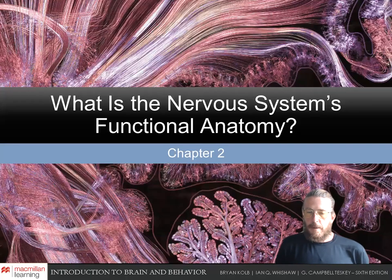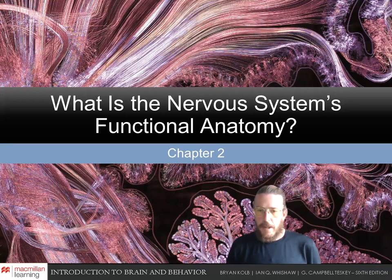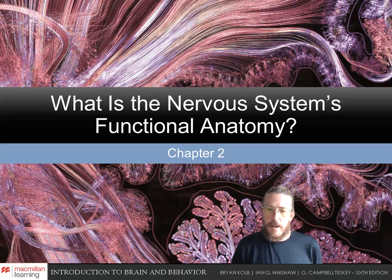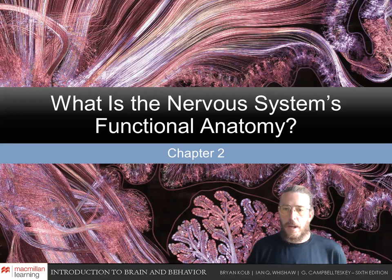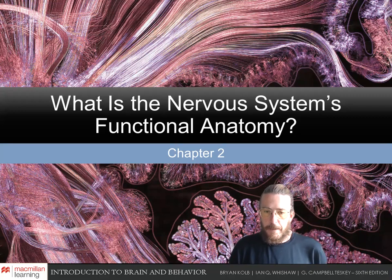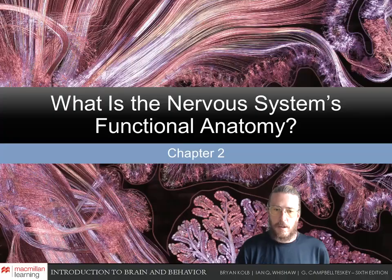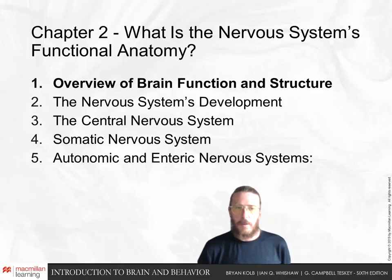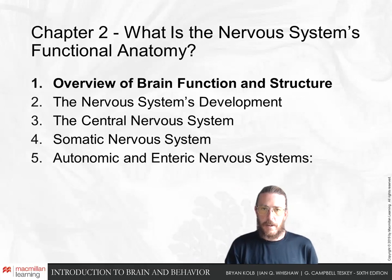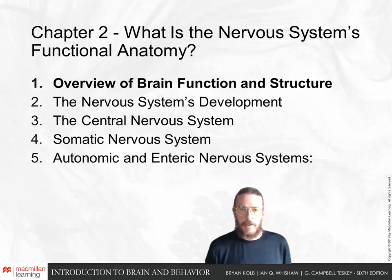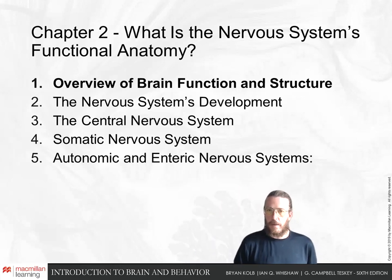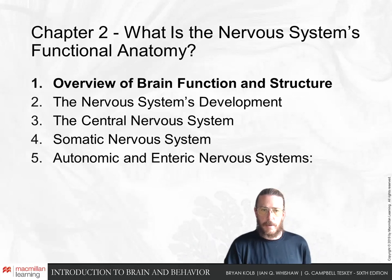Welcome back. In this lecture we'll be talking about the macroscopic anatomy of the human nervous system — things we can generally see without a microscope. In the next chapter, chapter three, we'll begin to talk about more microscopic things at the cellular level. We'll have a general overview of the function and structure of the human nervous system, its development, and then talk about the somatic and autonomic nervous systems as well.